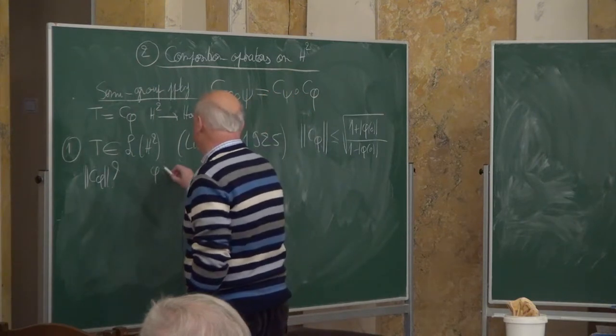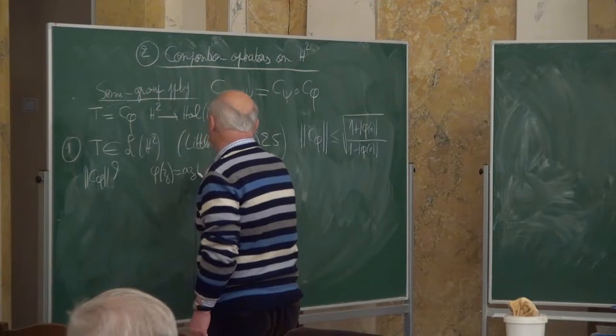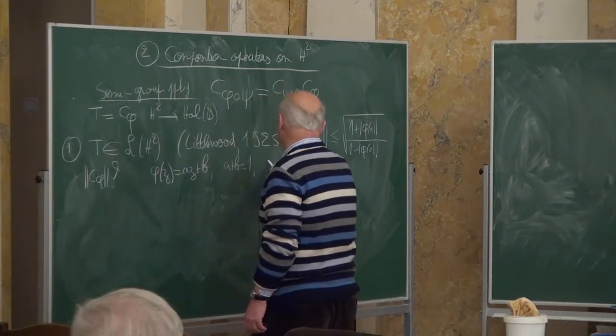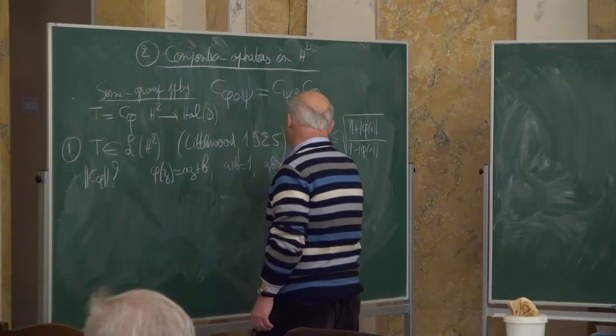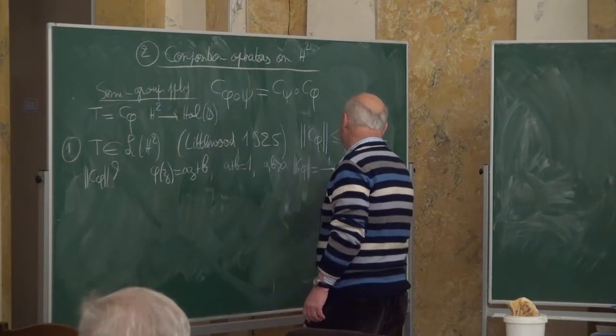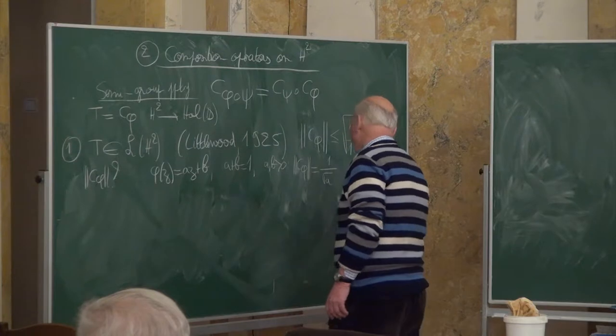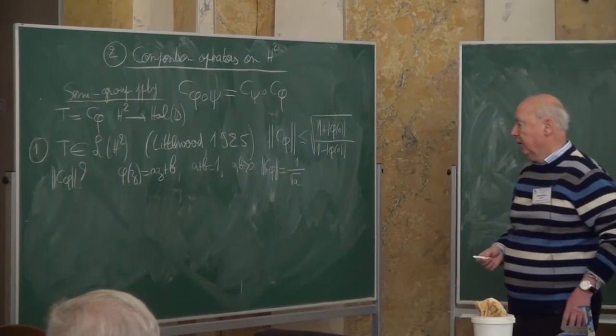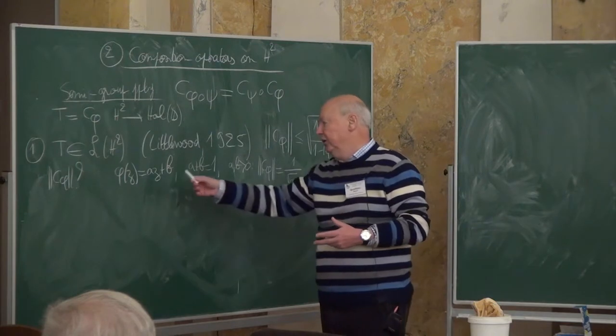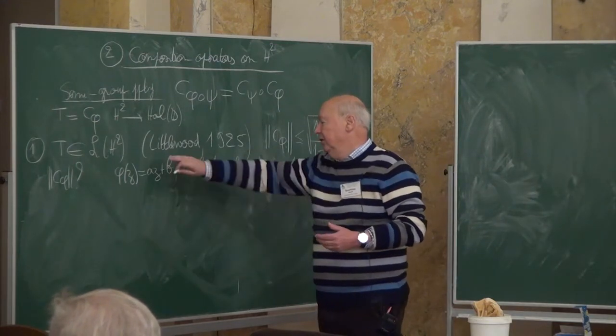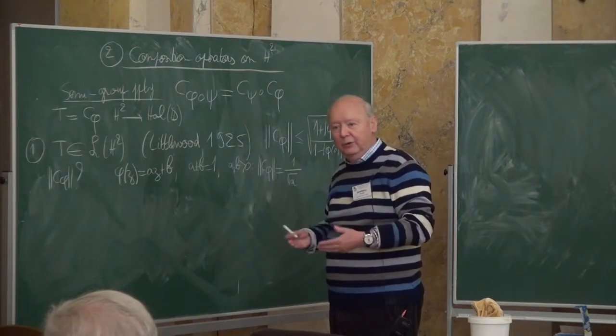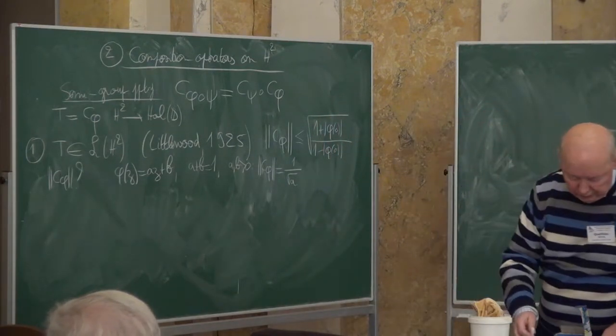One does not know how to give a closed formula for the norm of a composition operator on H2. And even if you take very simple symbols like affine symbols az plus b, say with a plus b equal to 1 and a and b positive, then you can compute exactly the norm of C phi. It's 1 over square root of a, but you have to prove it and it's not so trivial. Of course if you do it brutally, you take a function f, replace z by az plus b, expand by the binomial formula, permute—you are in the middle of nowhere. You have to be more precise.